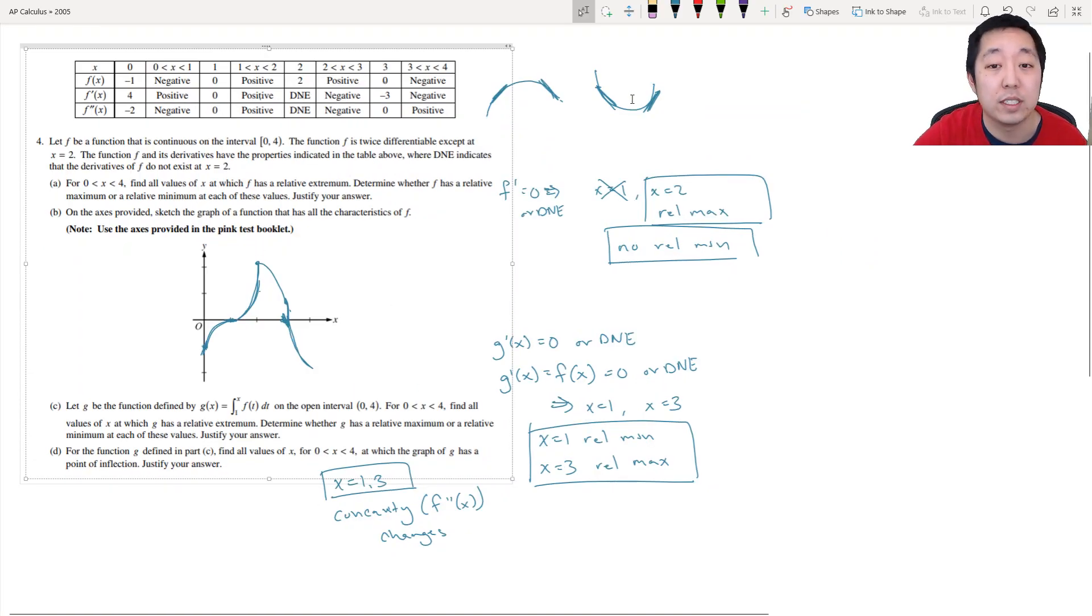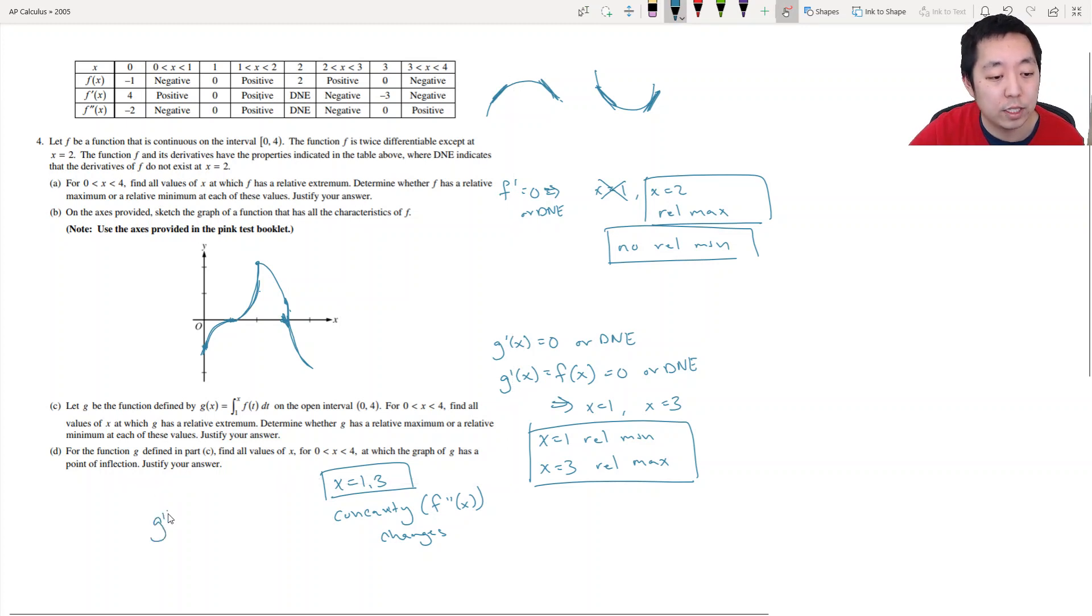x equals 2 would be correct because you want points of concavity for g. That means I need to know when g double prime of x changes signs. g double prime of x is equal to f prime of x, because we said g prime of x is equal to f of x. So that means g double prime of x is equal to f prime of x. So f prime of x changes signs at x equals 2. So x equals 2 is a point of inflection. So I messed up on that part.